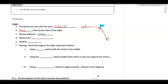Anytime we measure an angle, we measure it in degrees. How wide the angle opens is measured in degrees. The symbol for an angle is basically just a little angle symbol.